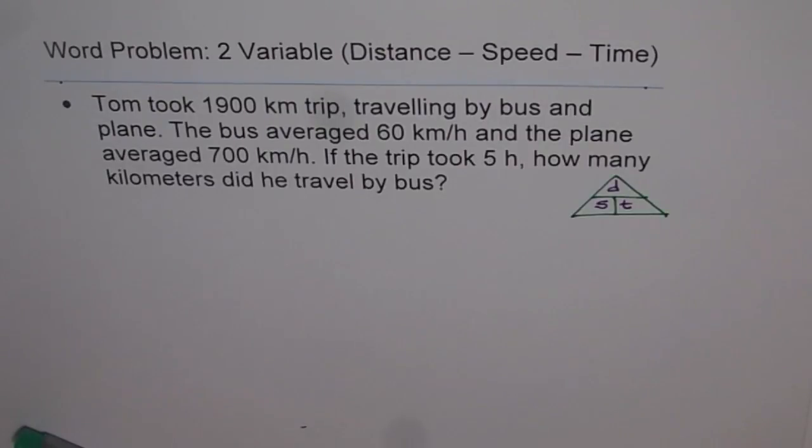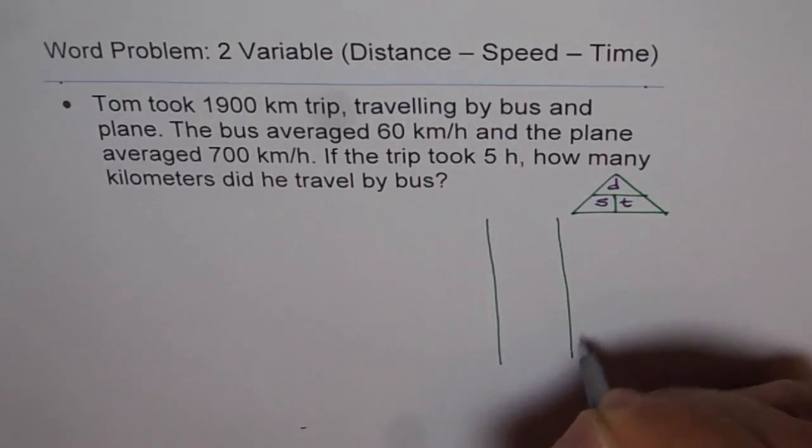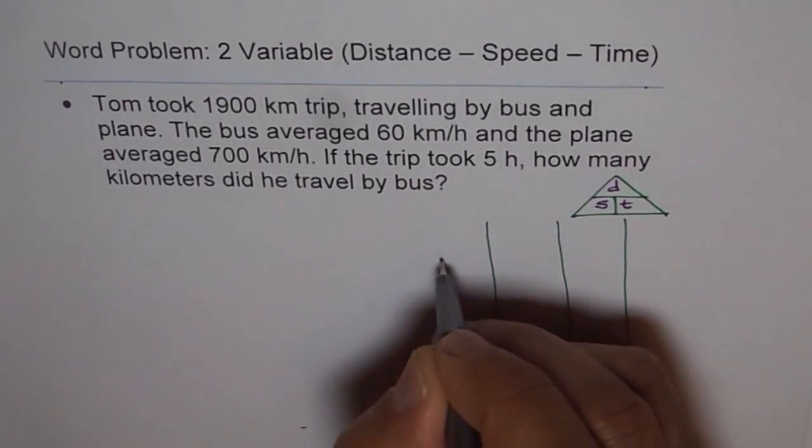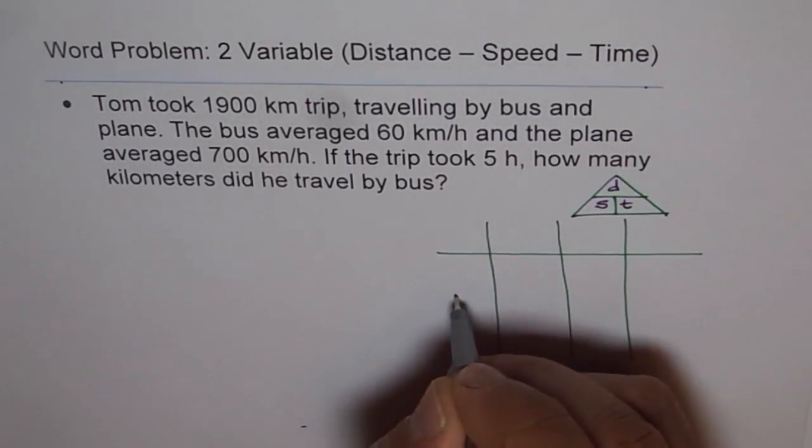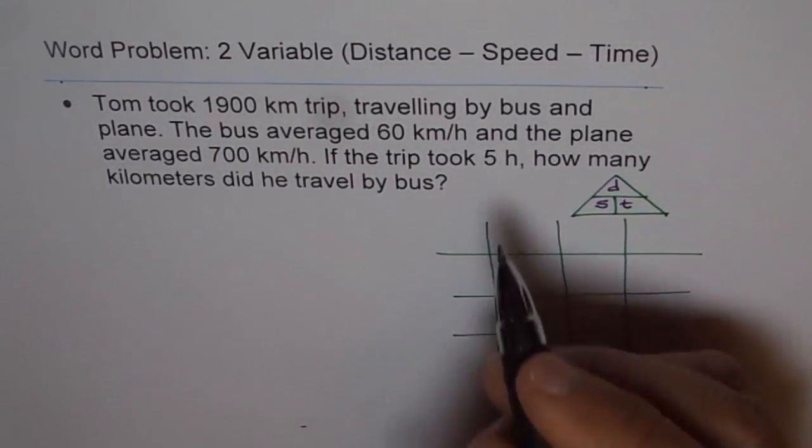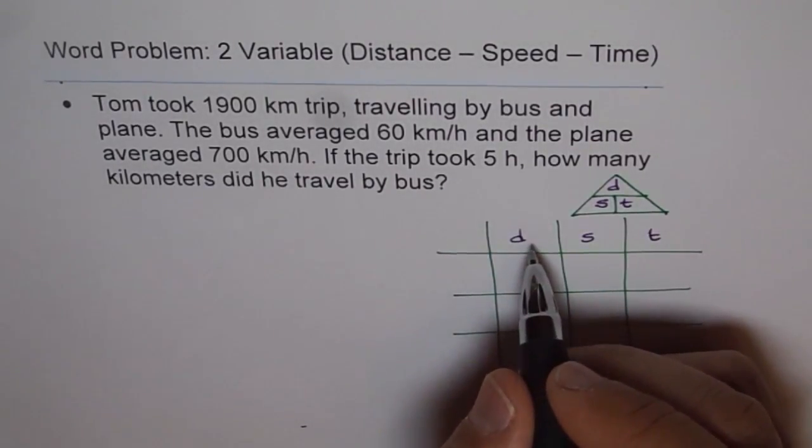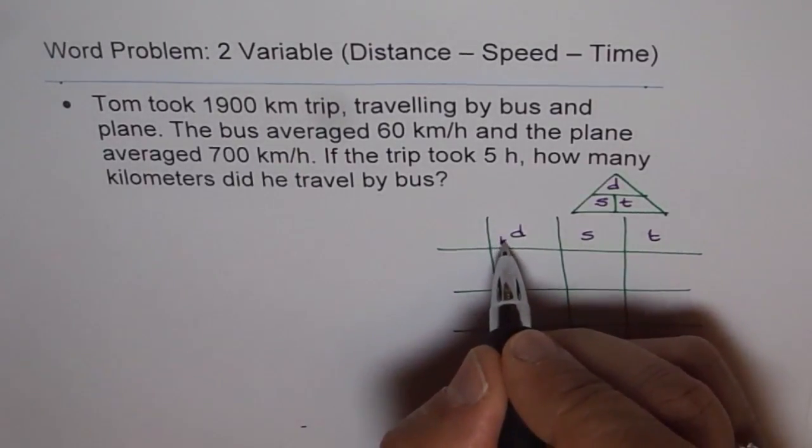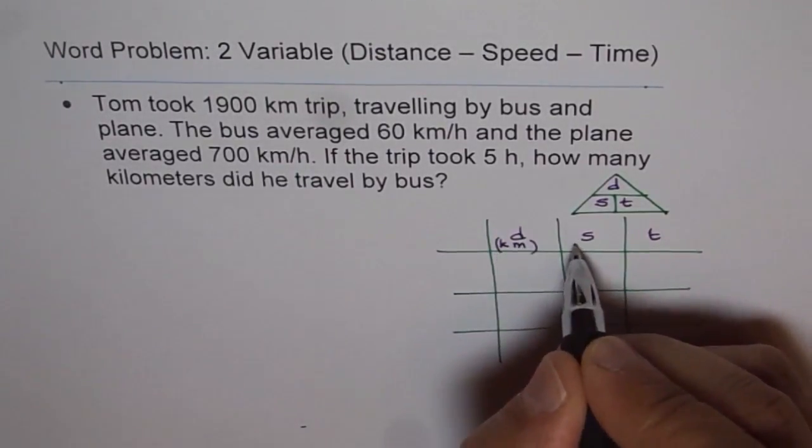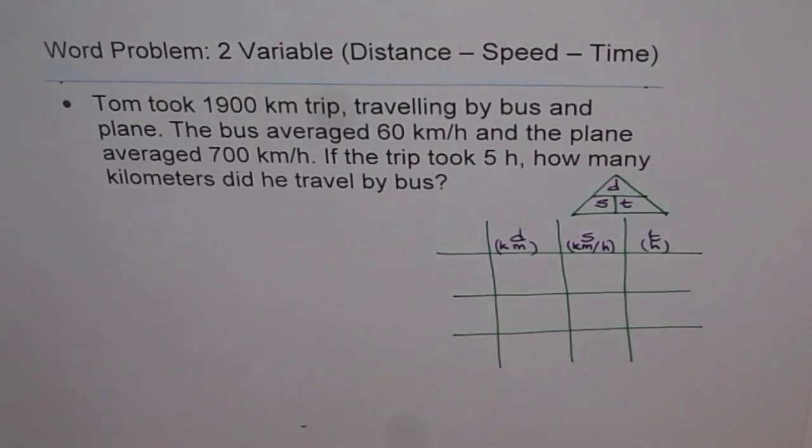Now we can translate this information in tabular form and then try to solve it. We will make columns for distance, speed and time. That is our table and we will put information regarding distance, speed and time here. Distance is being measured in kilometers, speed is in kilometers per hour, and time will be in hours for us.